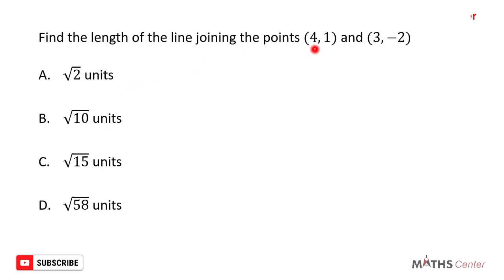We have two points that fall on the line: (4, 1) and (3, -2). The question wants us to find the length of the line joining these two points.